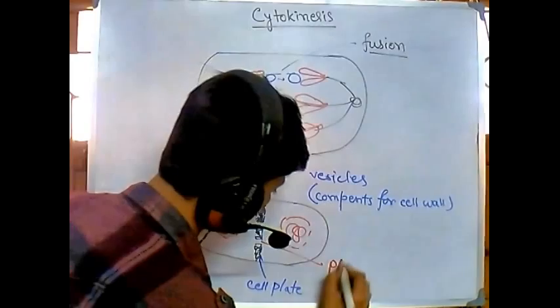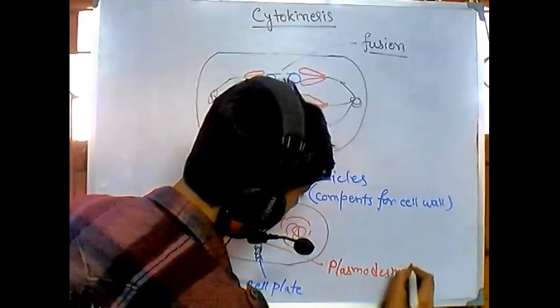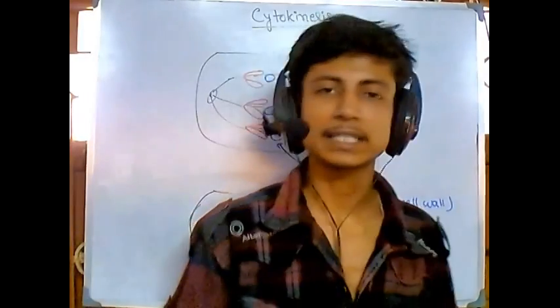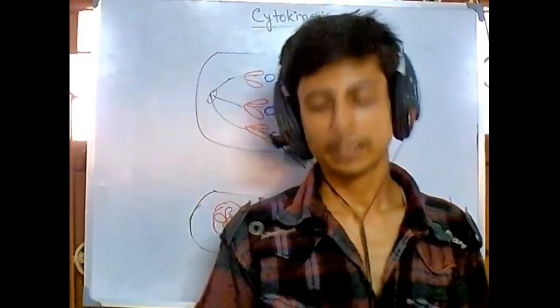So this is the way of how plant cells create the septum and they have cytokinesis. Thank you.